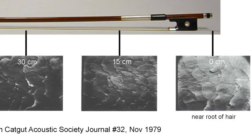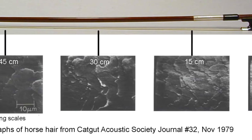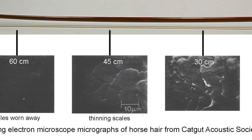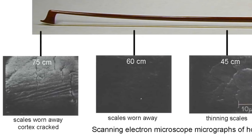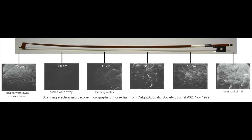The reason you need to rehair your bow is because when you play a lot, you wear out the scales on your bow hair and then the rosin has nothing to grip on to. Here, a bow has been divided into six sections and each imaged under scanning electron microscope. You can see that in the second and third sections, the scales are close to being completely worn away — the hair has been stripped past the cuticle layer down to the cortex or even the medulla, where there are no scales for the rosin to cling to. That's why even if you rosin the bow, you still won't get any traction.